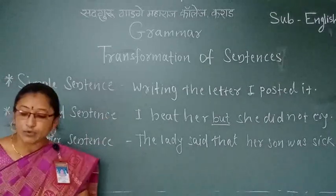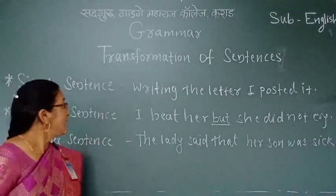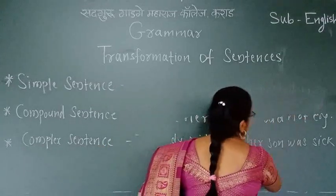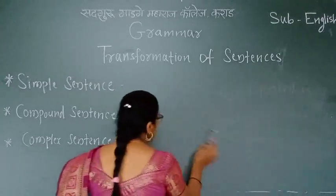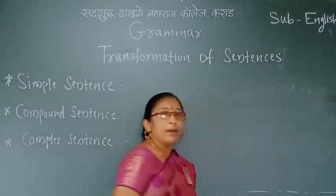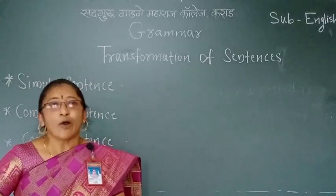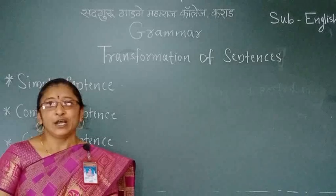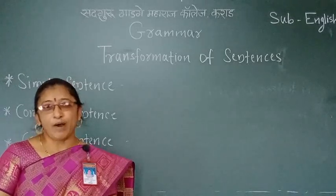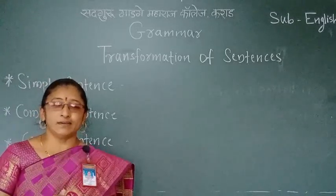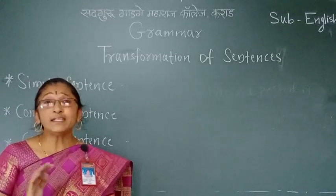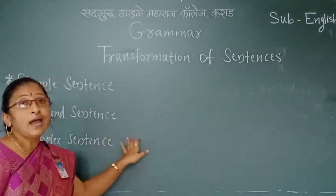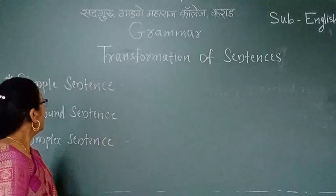So there are three main types of sentences: simple sentence, compound sentence, and complex sentence. In your activity sheet, a complex sentence may be given and in brackets there is an instruction to make it compound or make it simple, etc. — these types of transformation grammar questions are asked in the activity sheet.